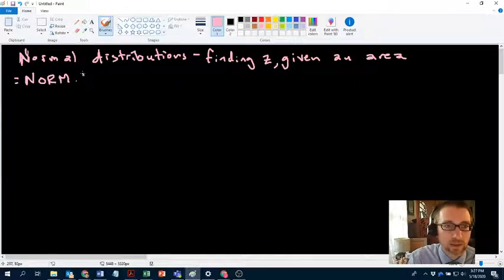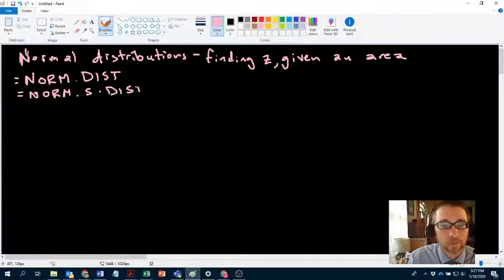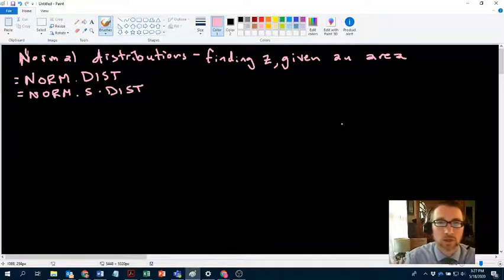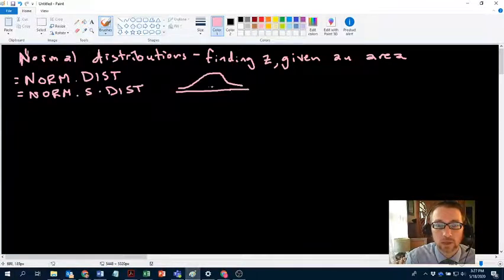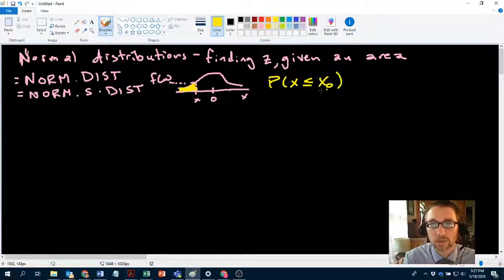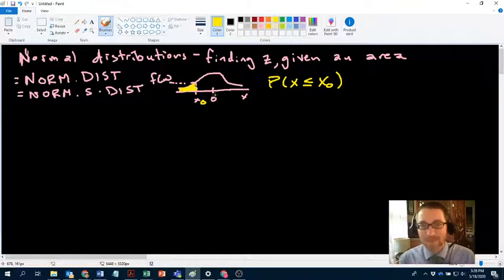If you want to learn about Excel, learn about norm.dist or norm.s.dist. Those both are the PDF and the CDF, the probability distribution function and the probability density function, which gives you the height of the curve. The CDF, the cumulative density function, tells you the area under the curve to the left of it.